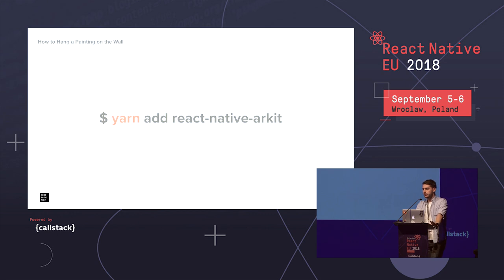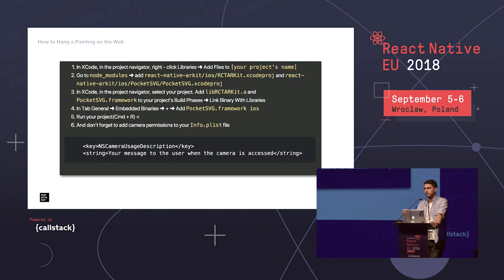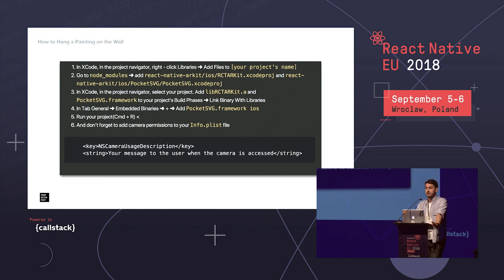Let's get started. Assuming you've already created a React Native application — not with Create React Native App, but the real one with iOS and Android folders and access to native code — you can just run 'yarn add react-native-arkit'. But it's not quite done: you also need to run 'react-native link', though linking isn't working at the moment, so you'll need to manually add files and import the required frameworks.